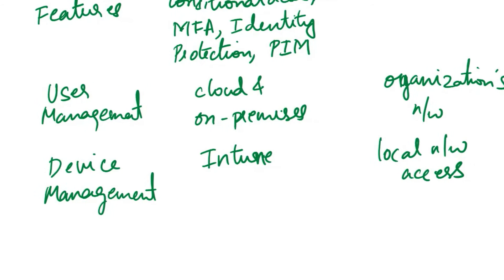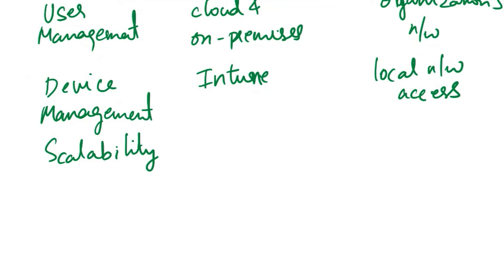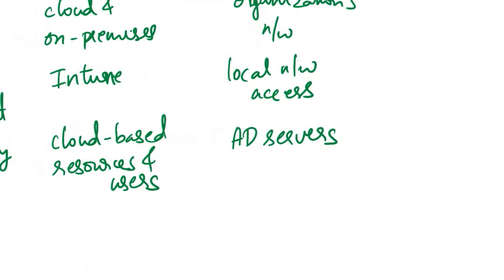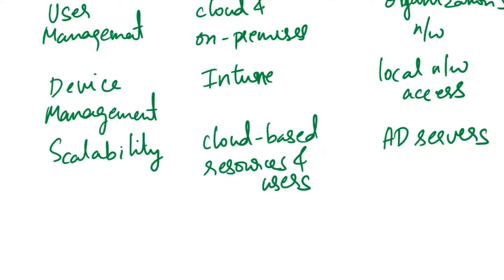The next aspect of comparison is scalability. Azure Active Directory scales horizontally with the growth of cloud-based resources and users. The scalability of on-premises Active Directory depends on the capacity and architecture of on-premises AD servers. Scalability is actually better in Azure AD practically.